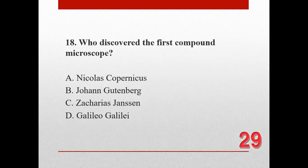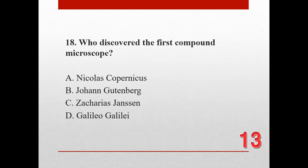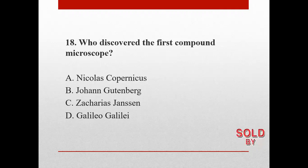Number eighteen. Who discovered the first compound microscope? A. Nicolas Copernicus, B. Johann Gottenberg, C. Zacharias Janssen, and D. Galileo Galilei. The correct answer is C. Zacharias Janssen.